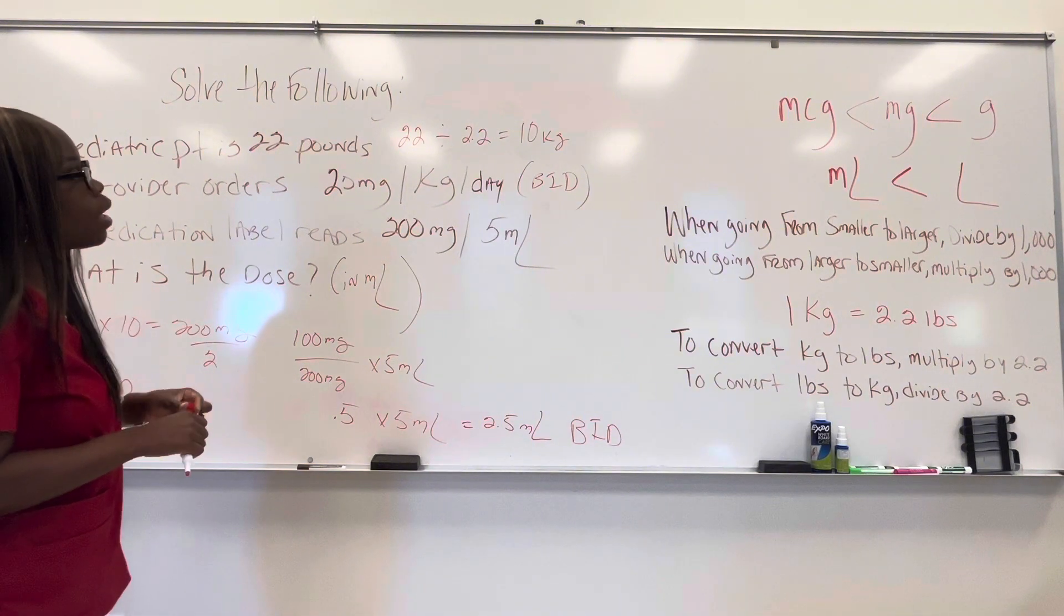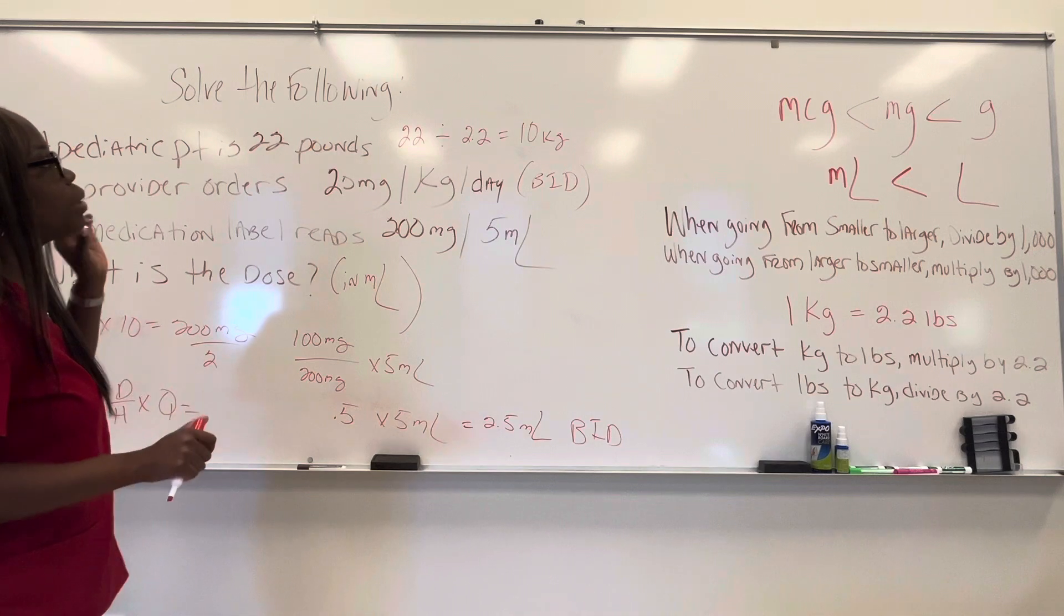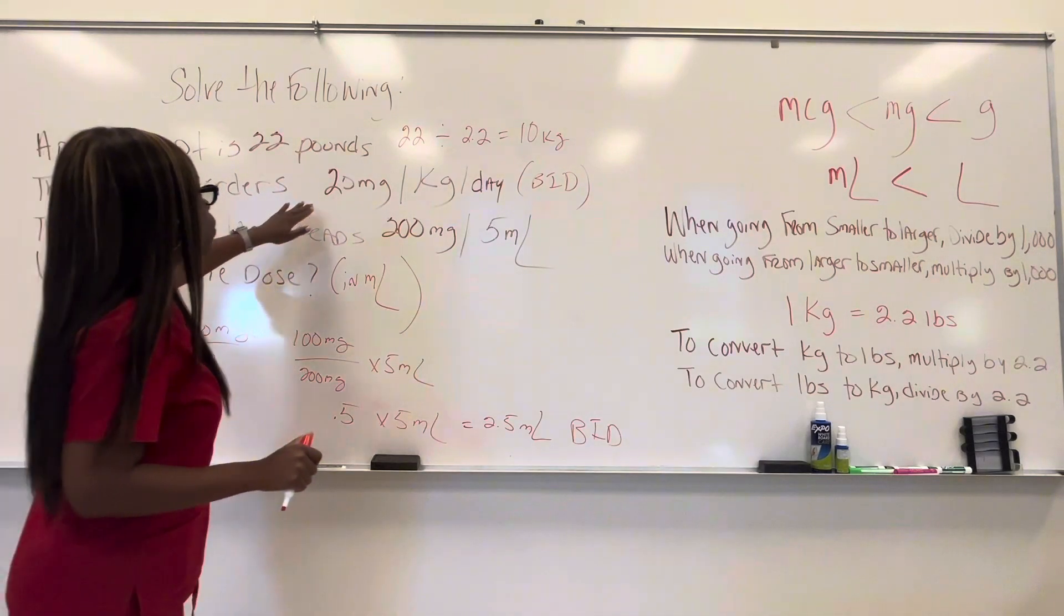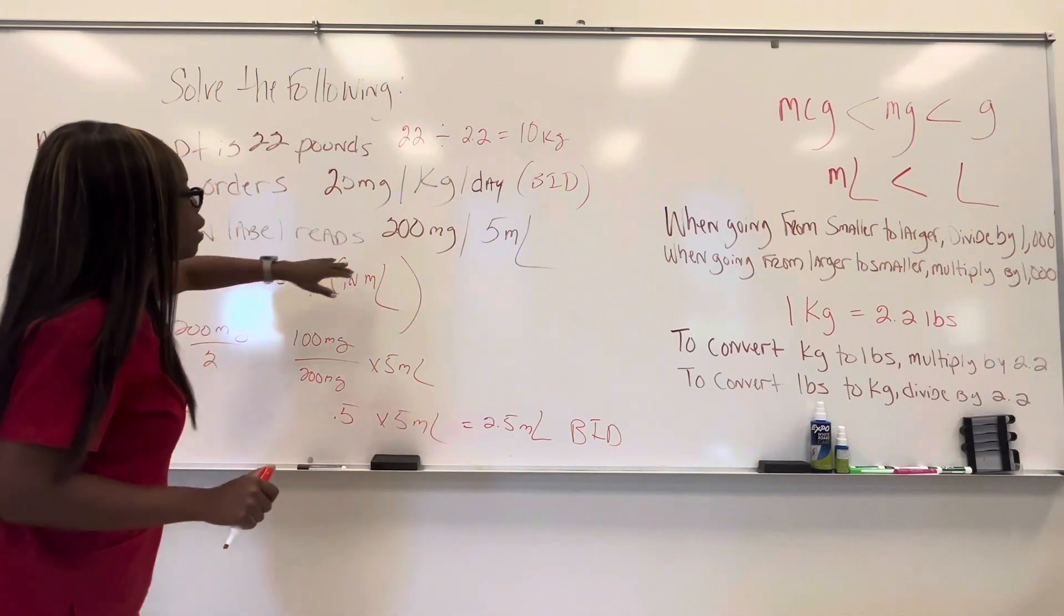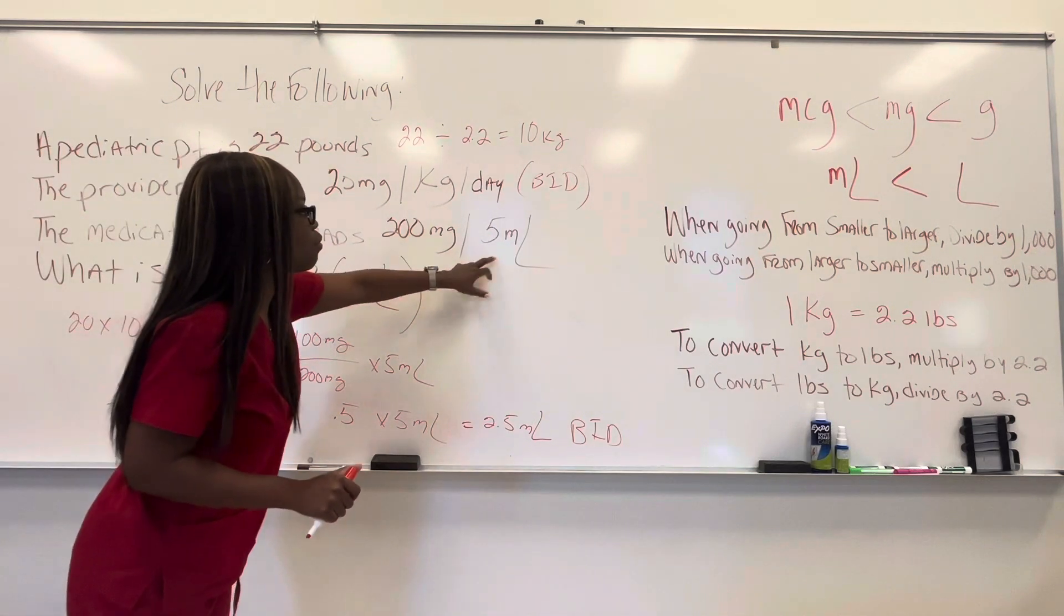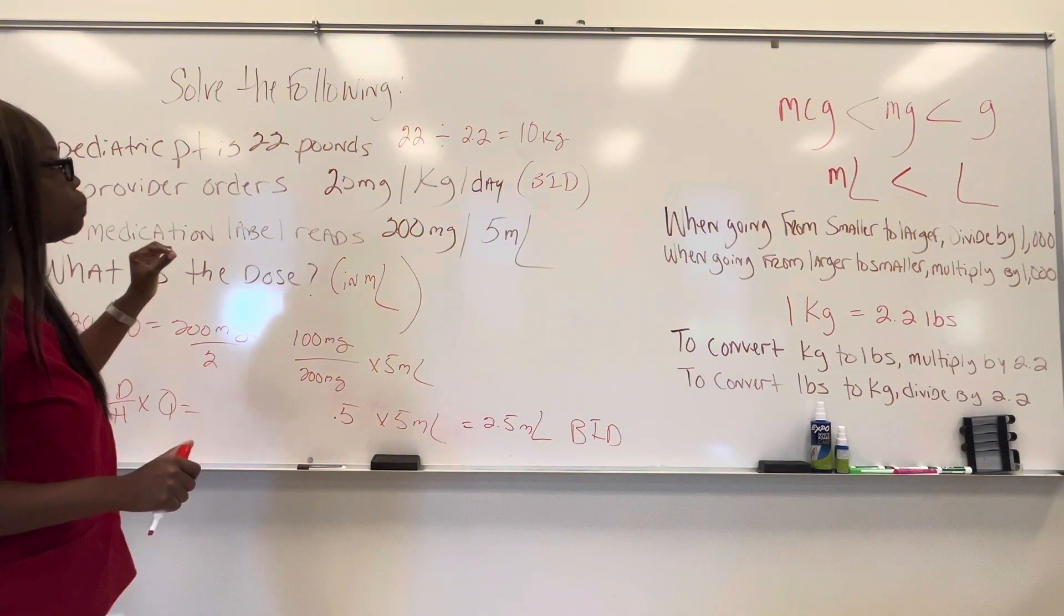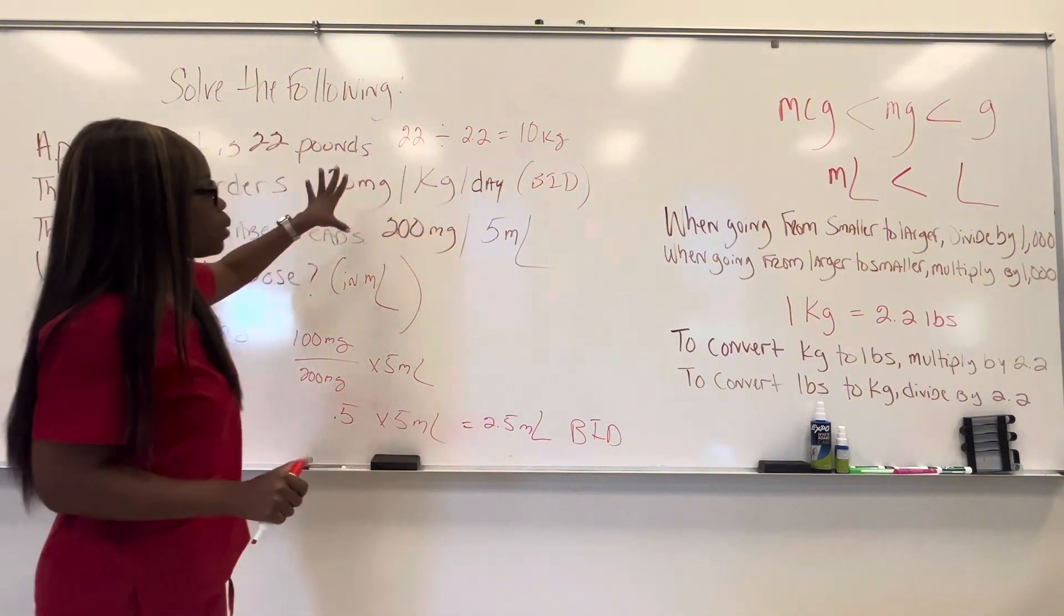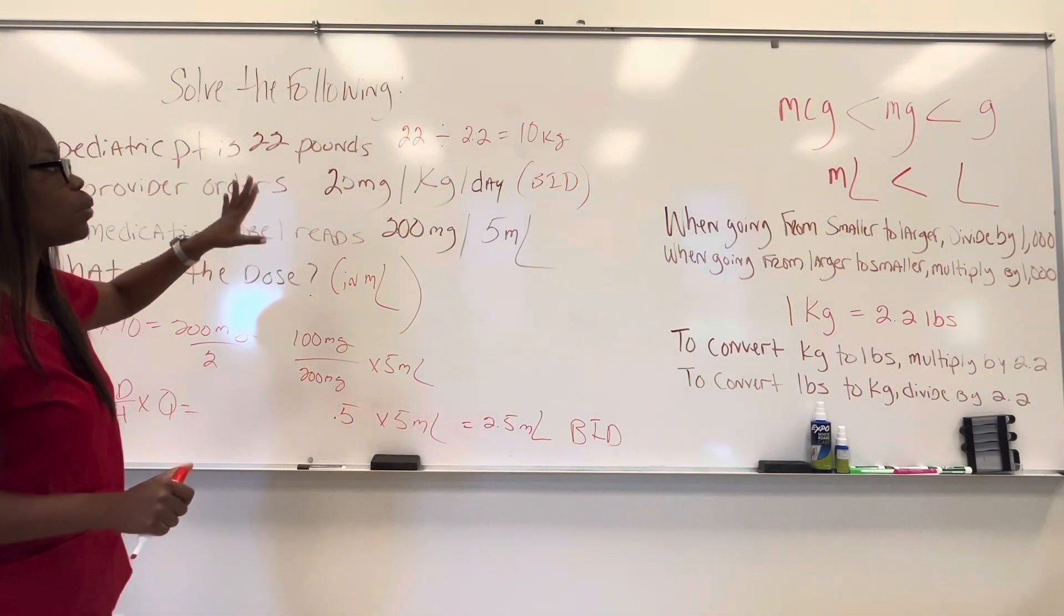So hopefully this was helpful. The same thing that I did today is the same thing you want to do. You're just going to plug in whatever numbers they give you. So whether this is 40 milligrams per kilograms a day or 50 or whatever, whether this is 400 milligrams per five milliliters or whatever, you just plug in your numbers. Just remember, if it says per day and nothing else, that just means that's what they want the patient to take every day, right? And that one single dose.